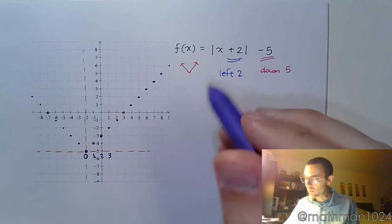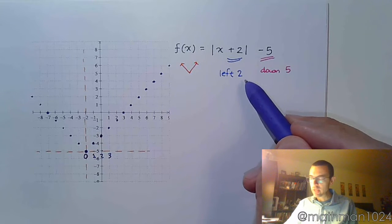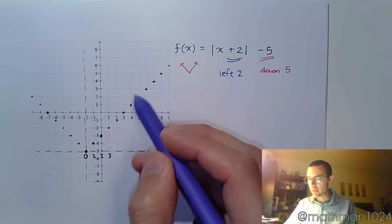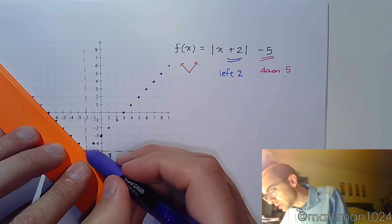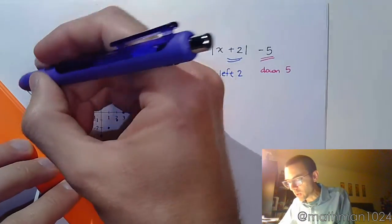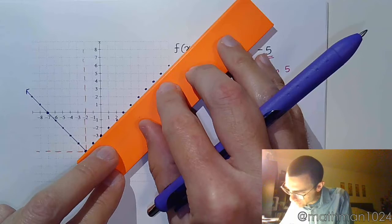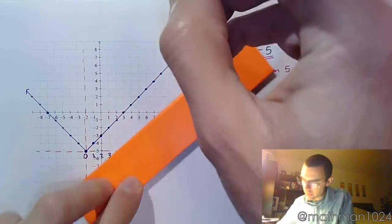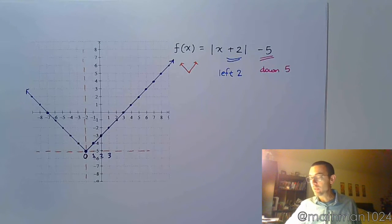Now, notice, once I went left 2 and down 5, I didn't need to use those numbers anymore. That's where I start, and then I use the shape to finish the rest of this. I use those key points. All right, so going to the edge of the graphing window, putting arrows on the end, and the same thing here. To the edge of the graphing window with arrows. And there we have it. Pretty straightforward, I hope.